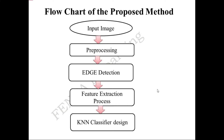This is the flowchart of the proposed method. We give the leaf images as input and then pre-process the image to enhance its quality. The pre-processing is performed using an averaging filter. After pre-processing, edge detection algorithms are applied — specifically, the canny edge detection algorithm is used. After edge detection, statistical features are measured from the leaf images. In the final stage, a KNN classifier is designed using the extracted features.